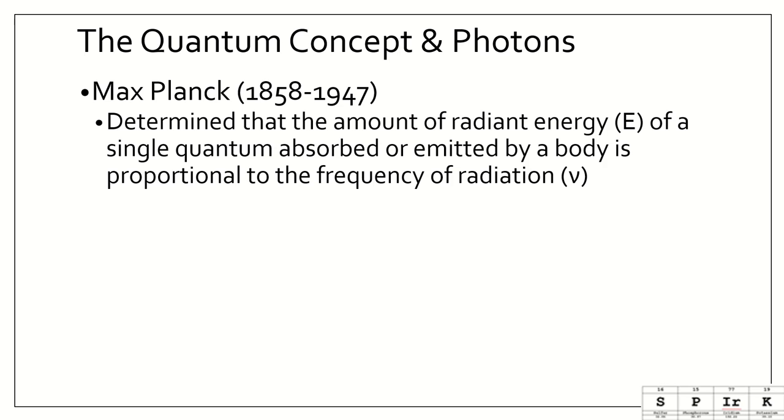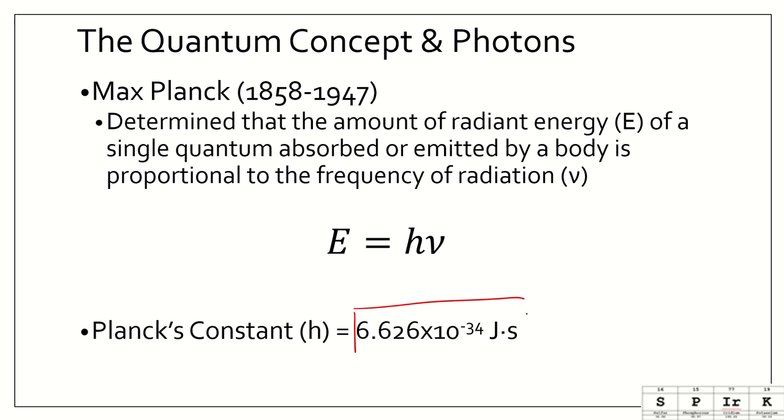We have this scientist named Max Planck, and he determined that the amount of radiant energy of a single quantum absorbed or emitted by a body is proportional to the frequency of radiation. This is just another equation we have here, so this is that the energy is equal to H times nu, and that H is what we know as Planck's constant, and Planck's constant is 6.626 times 10 to the negative 34 joule times seconds.